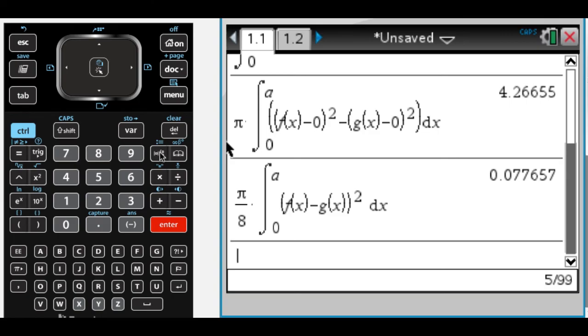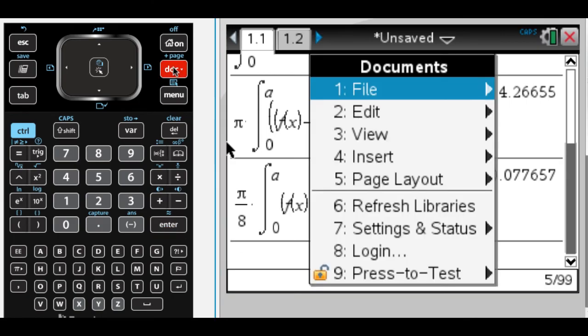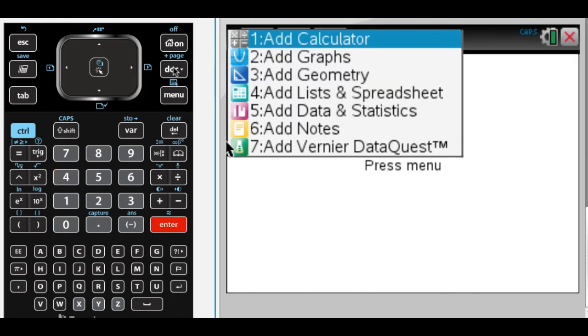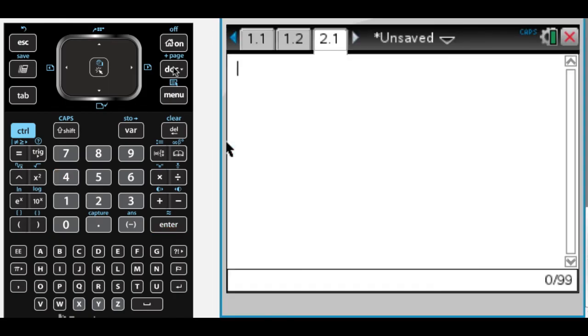Where that comes from is, let me insert a problem here. So where that's coming from is that G of x minus F of x, sorry, F of x minus G of x, top, take away, bottom. That's actually the diameter.